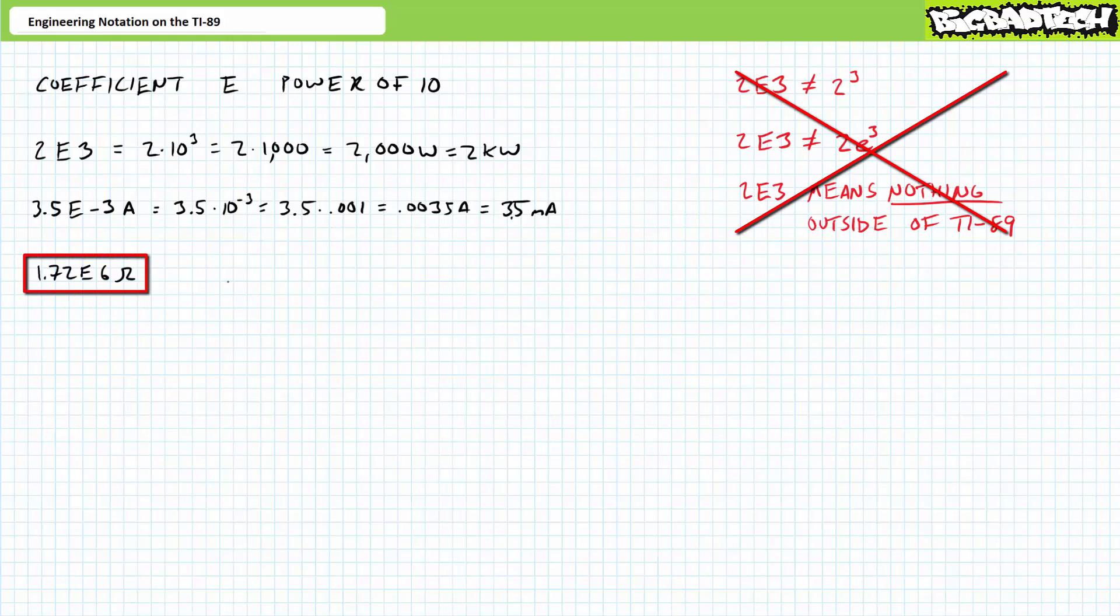Let's say the calculator is now displaying 1.72E6. Let's pretend this is in unit of ohms. TI-89 tells us the coefficient, in this case 1.72, tells us we're in engineering format with a capital E, and what power of 10 we're multiplying the coefficient by. In this case, 10 to the 6, or a million. We know the engineering prefix associated with 10 to the 6, or a million, is a mega, or capital M. So if this was a measure of resistance in unit of ohms, the calculator is saying 1.72 megaohms, or 1.72 megaohms, is equivalent to 1,720,000 ohms in the base unit.